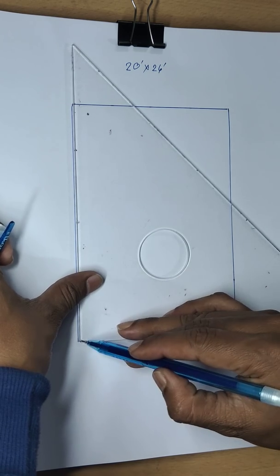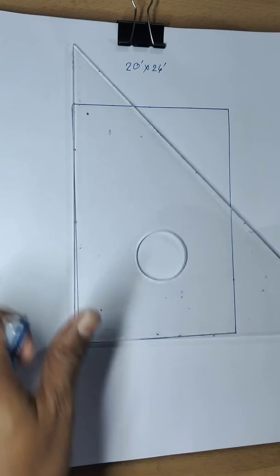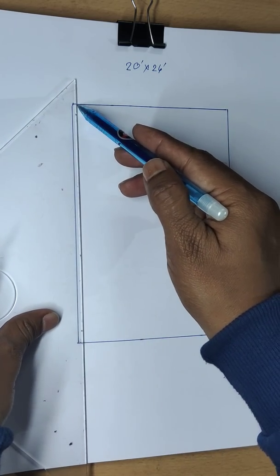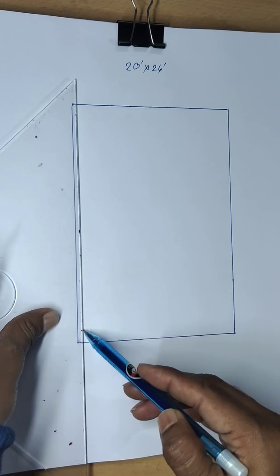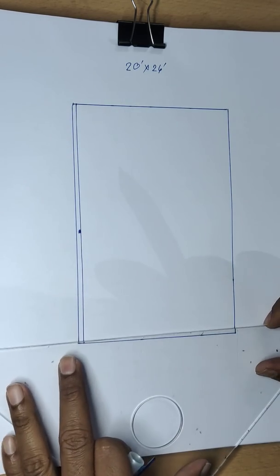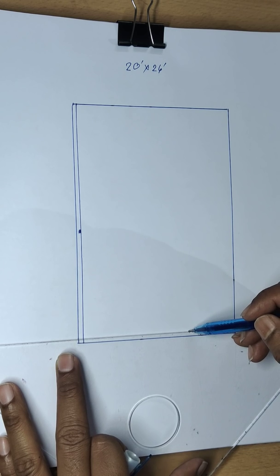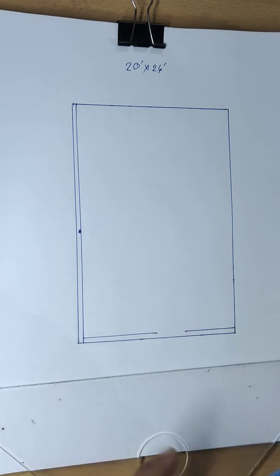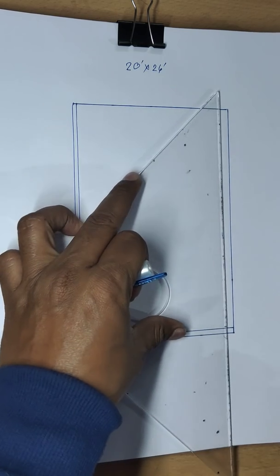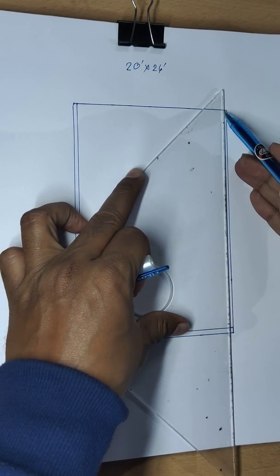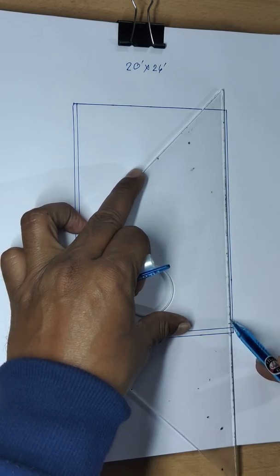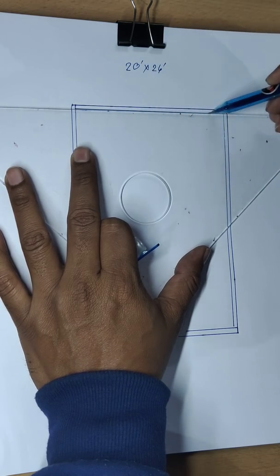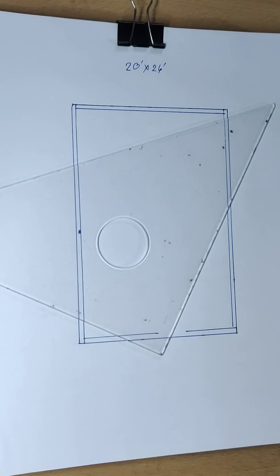This is the outside wall, and this is wall. So this is outside wall and this is outside wall.